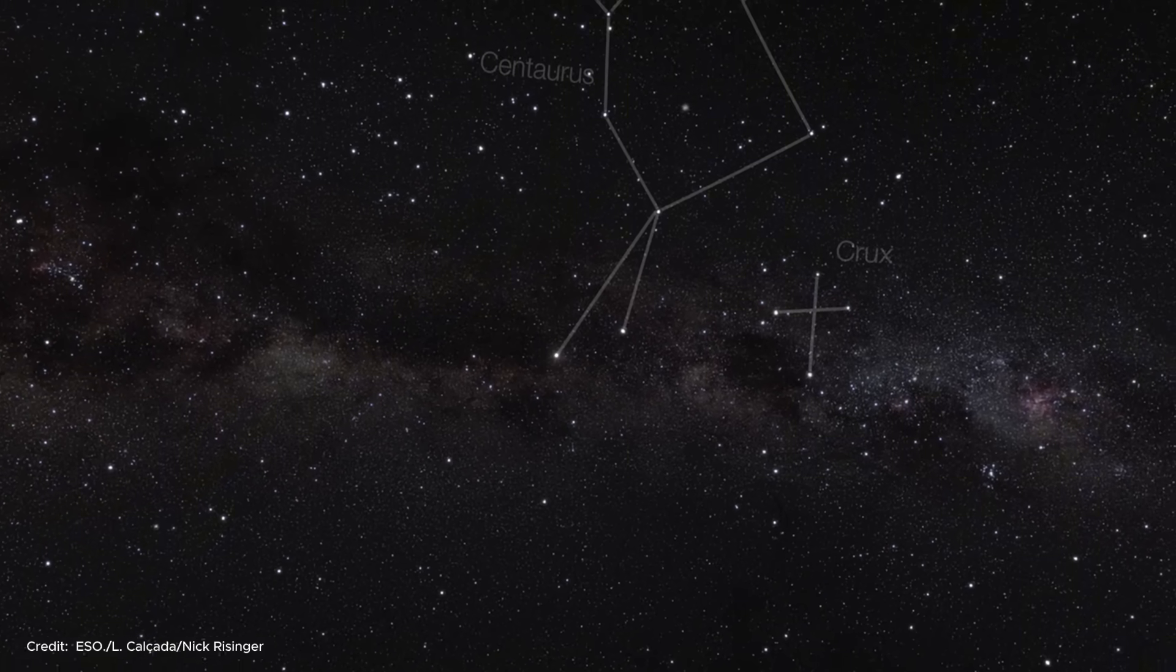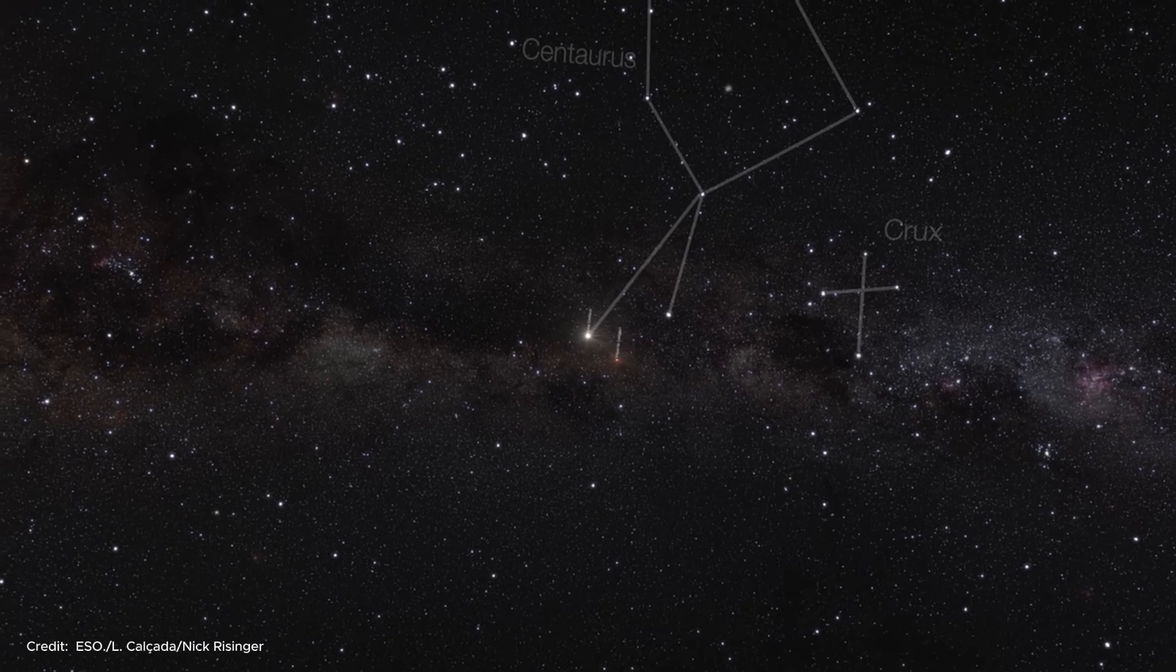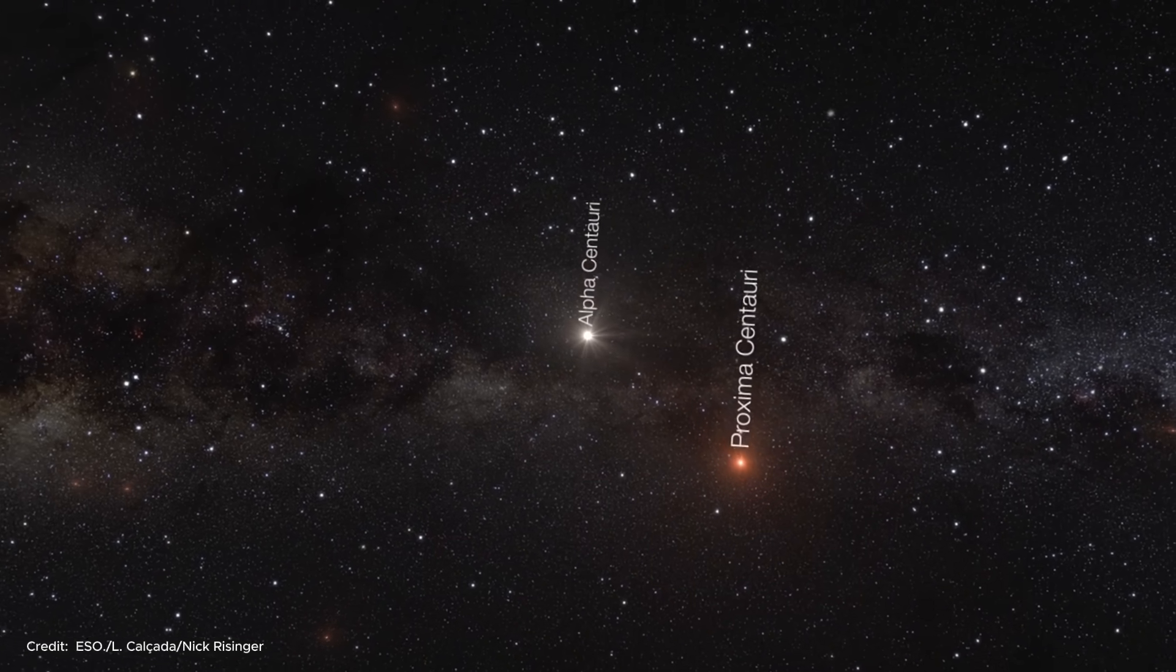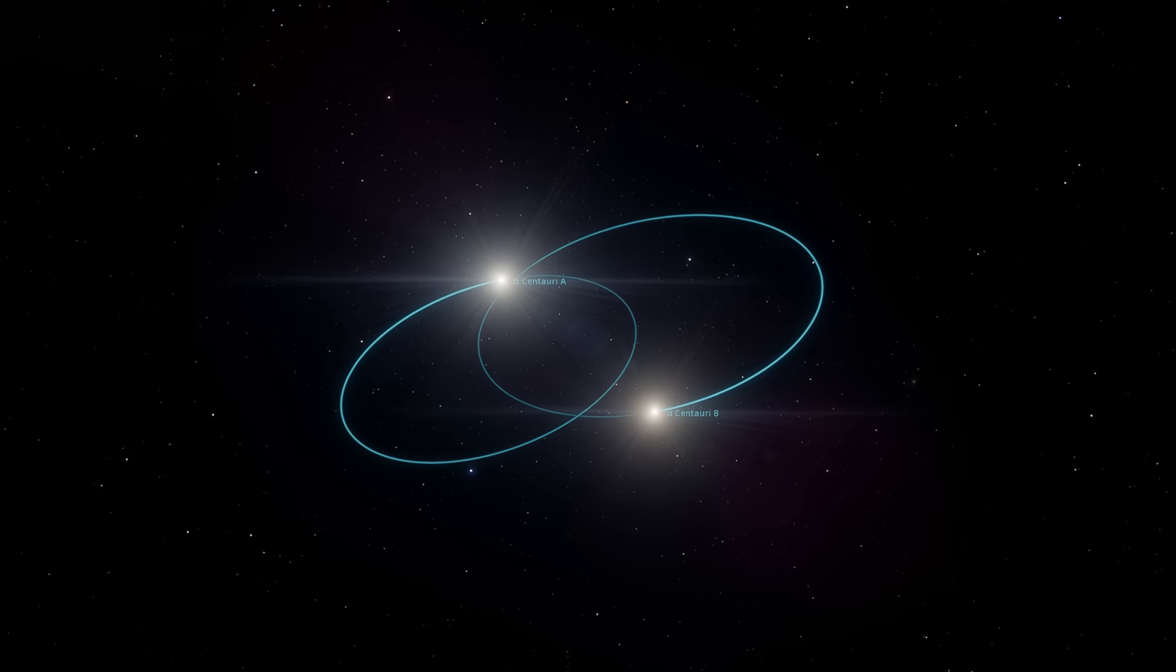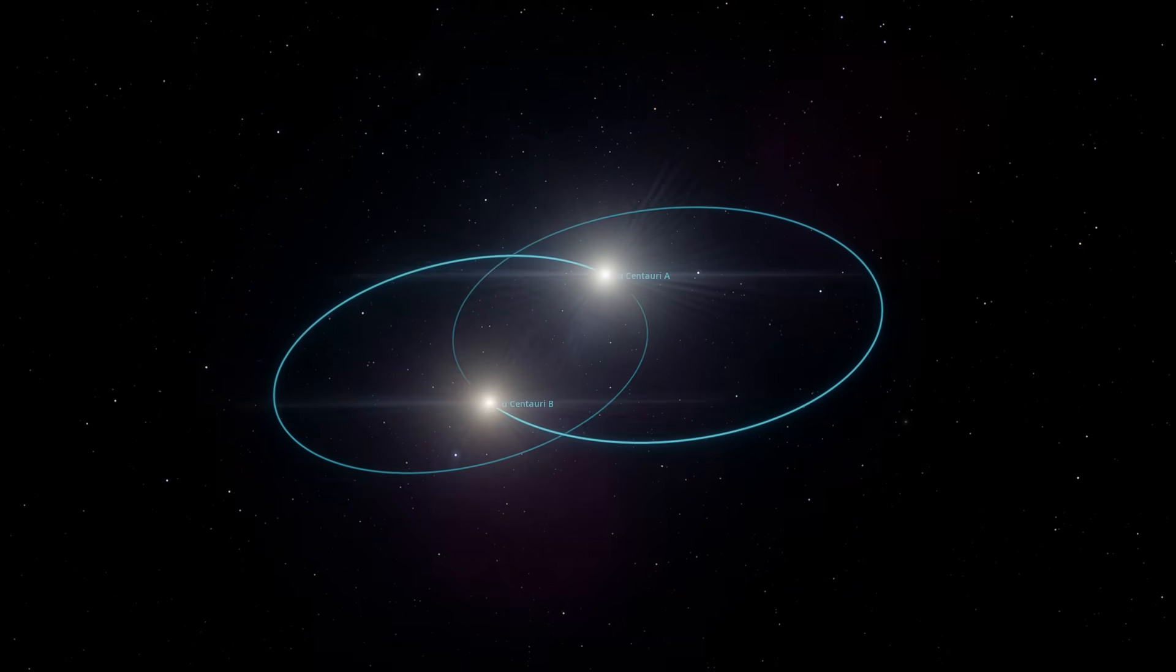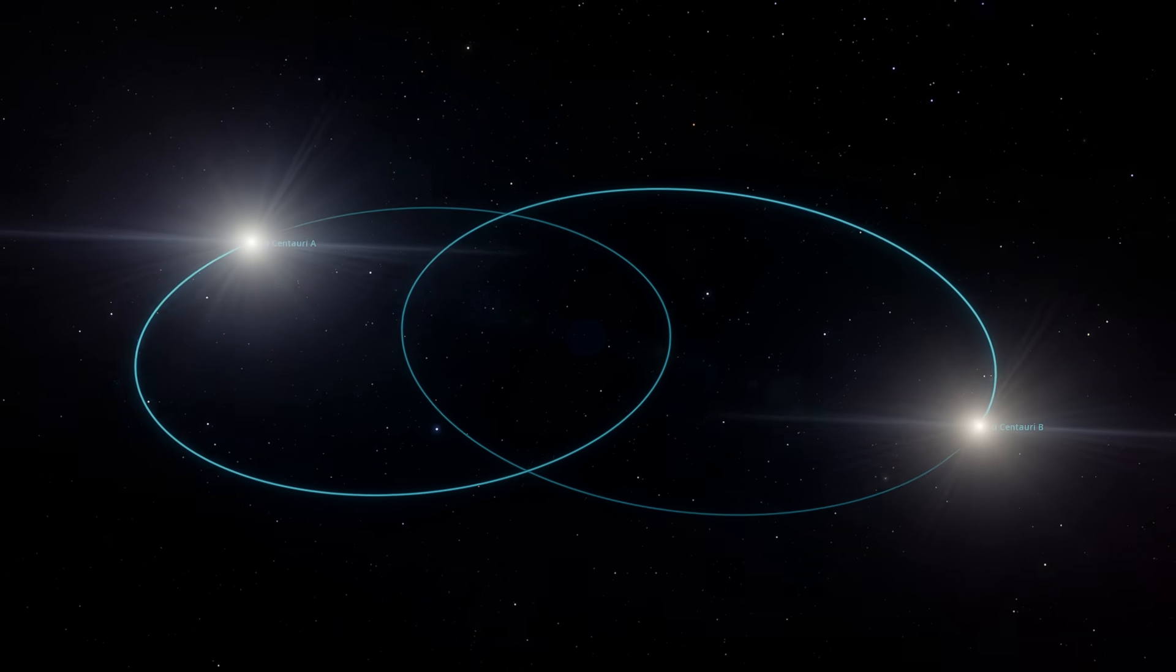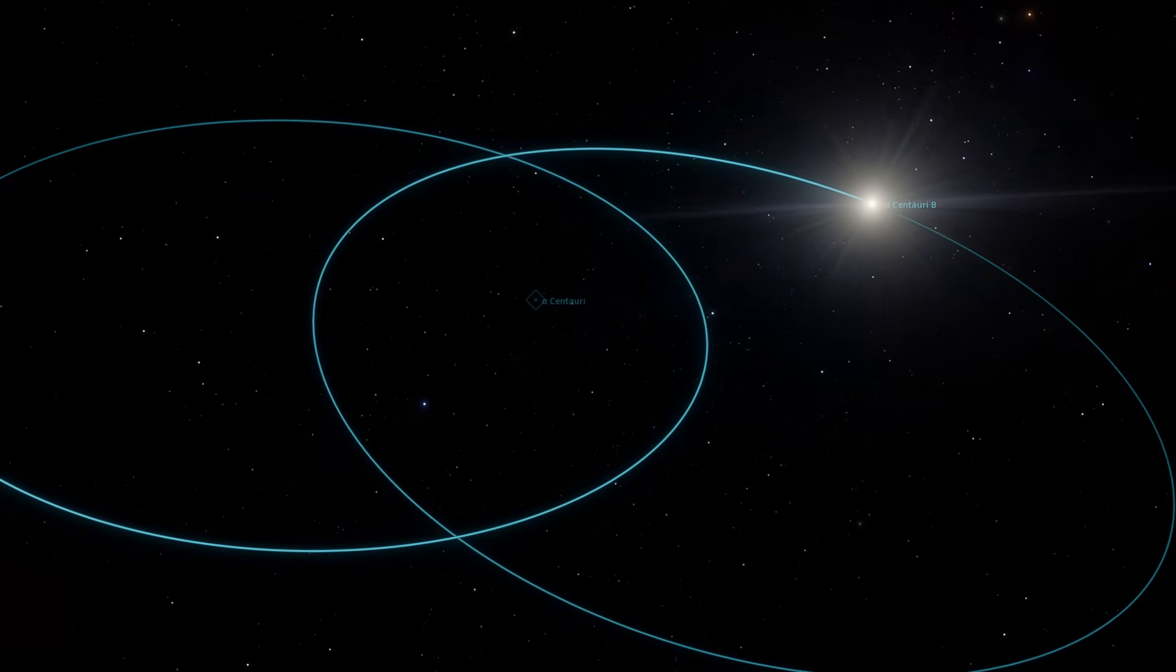The first star system we encounter after leaving the solar system is Alpha Centauri. Although Alpha Centauri looks like a single star to the naked eye from Earth, it is actually a system of three stars. Another name of this system is Rigel Kentaurus. The system consists of two large stars orbiting each other every 80 years and a smaller star orbiting them. The star similar to our sun and slightly larger is called Alpha Centauri A, and the slightly smaller and cooler star is Alpha Centauri B.